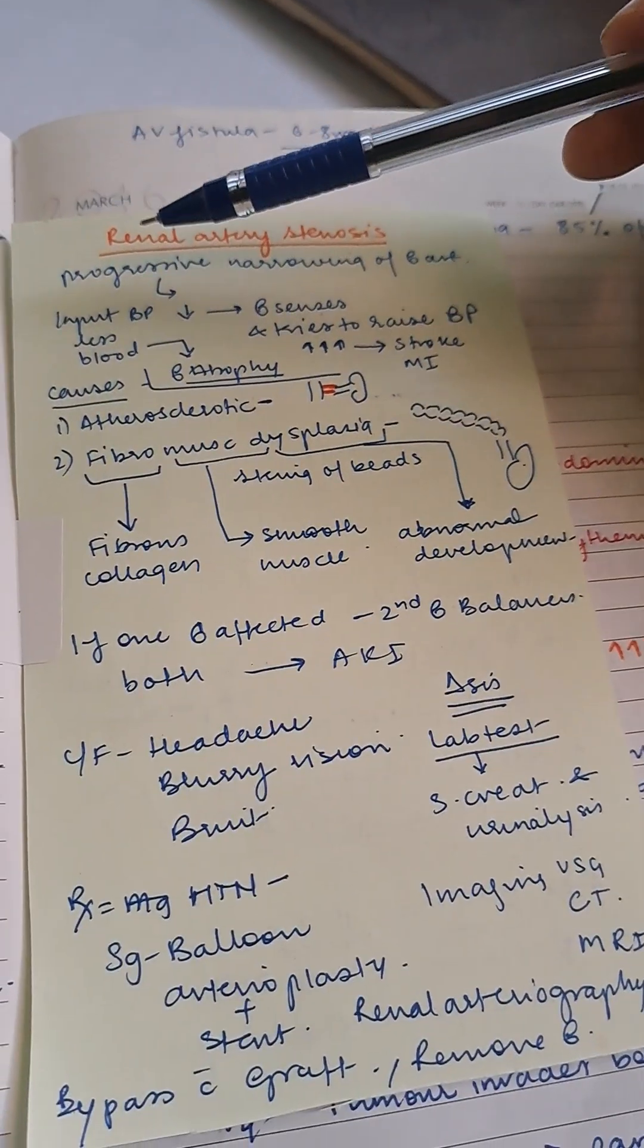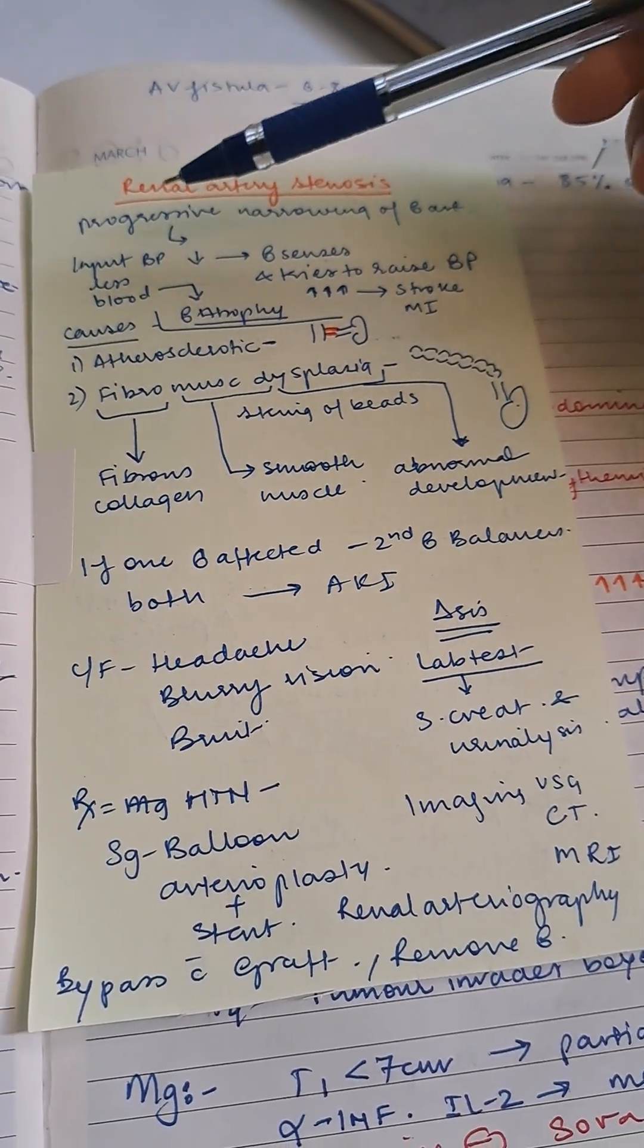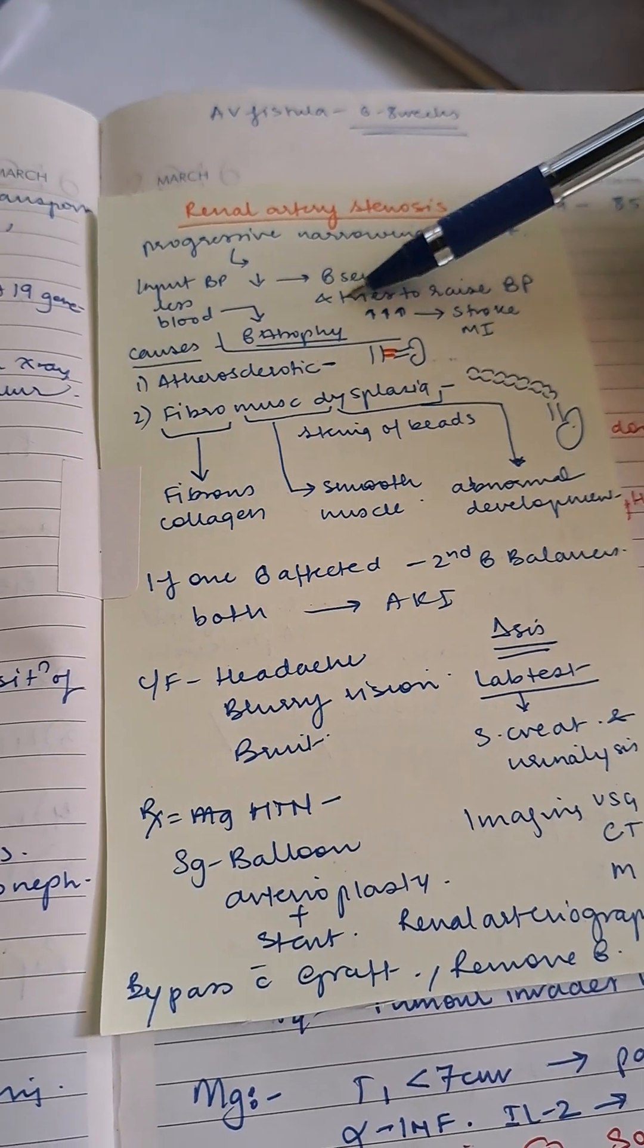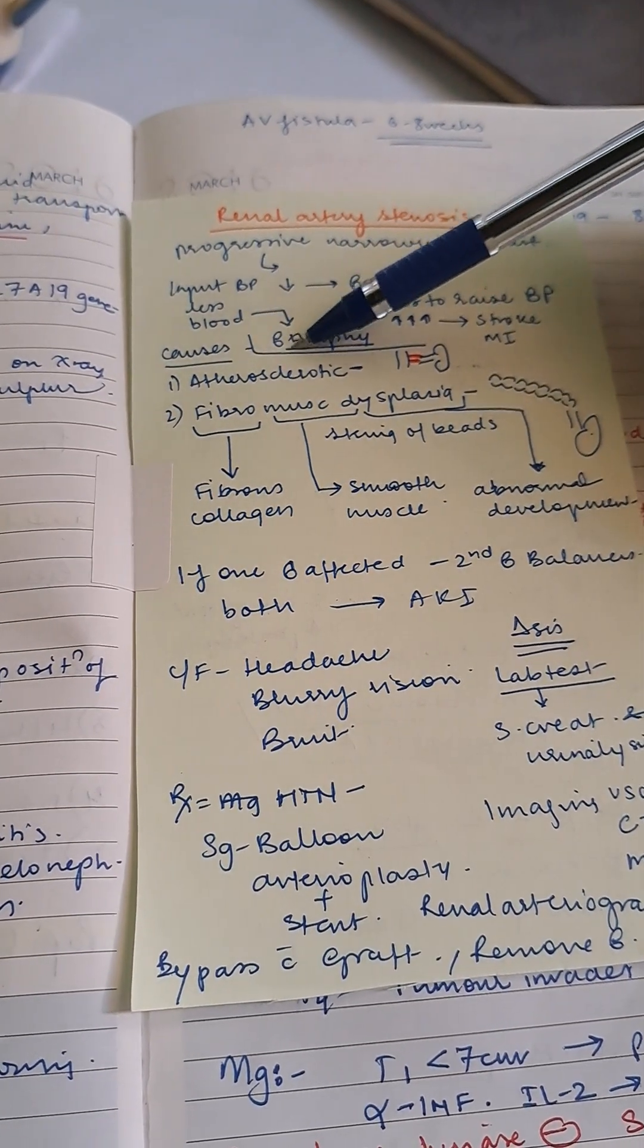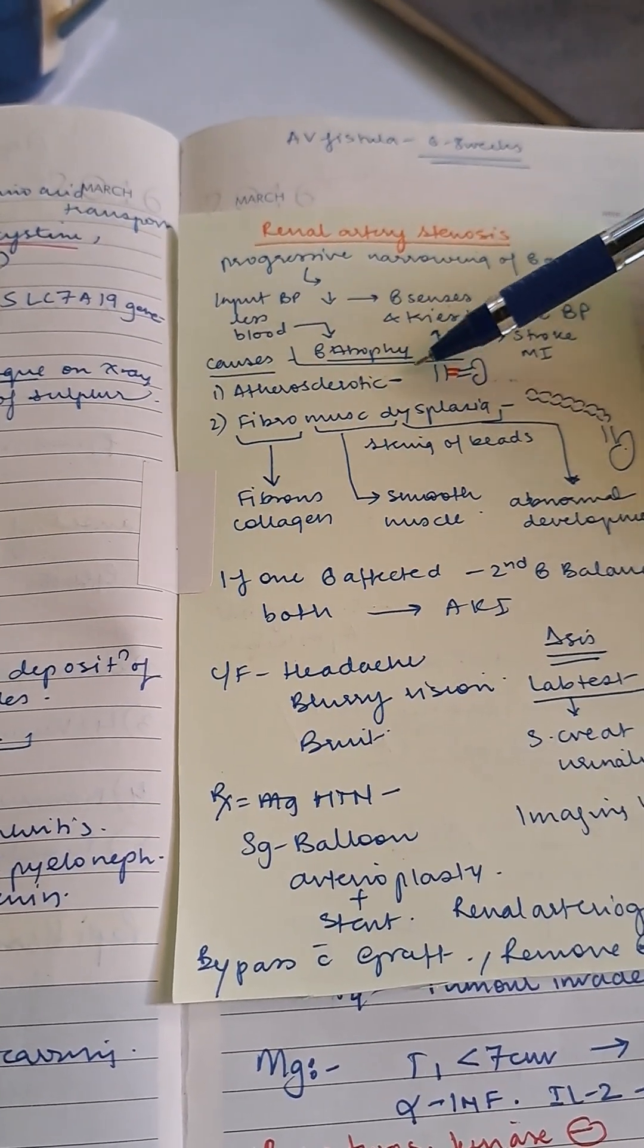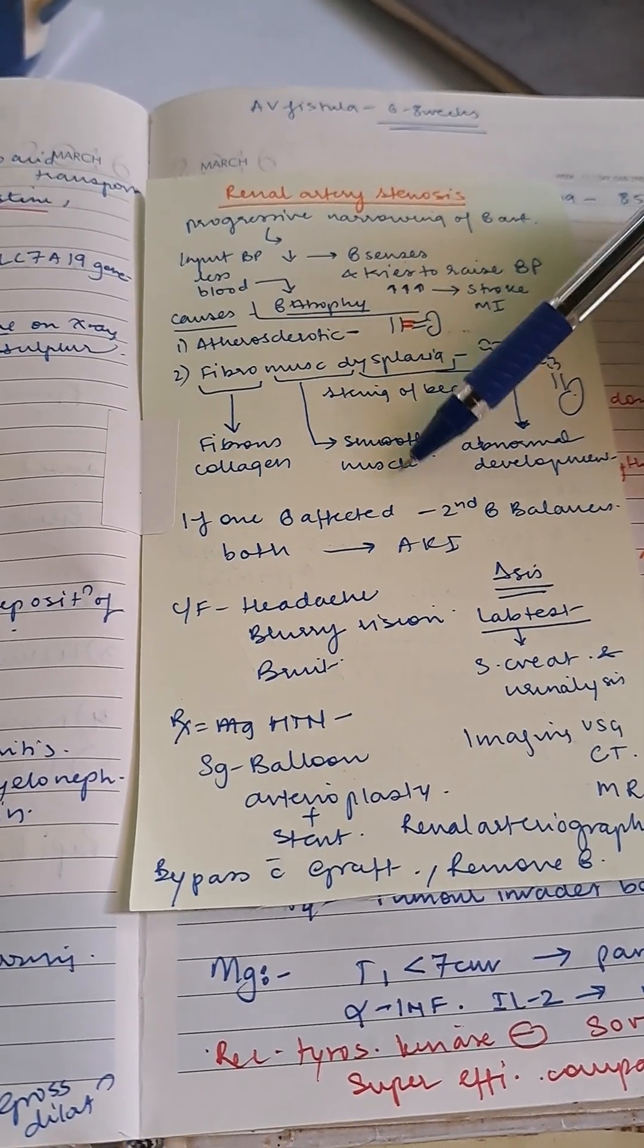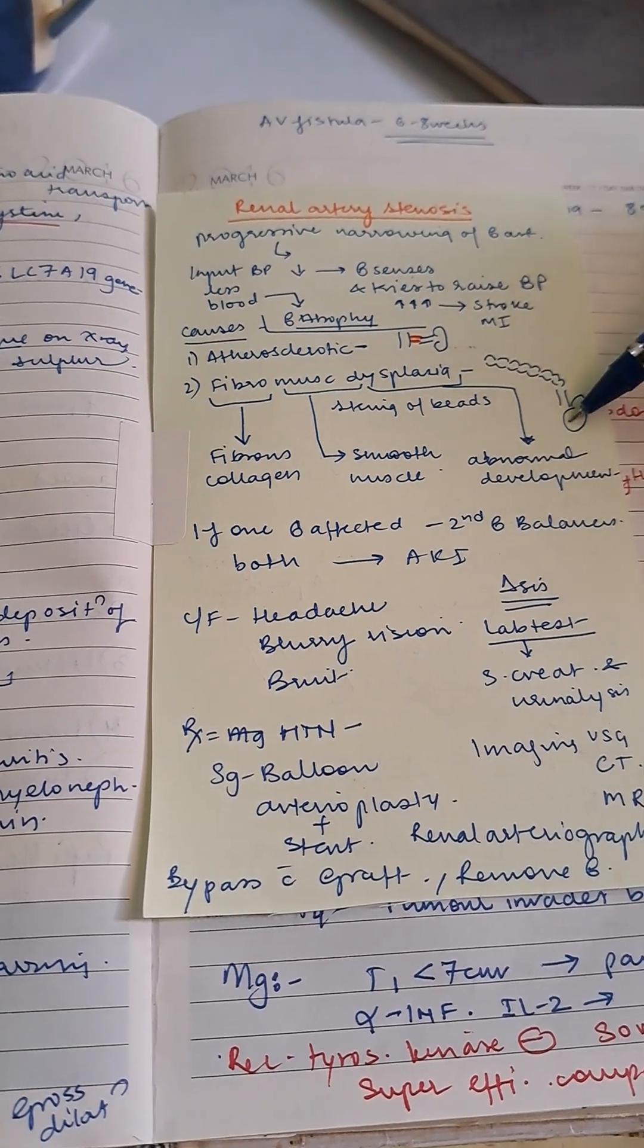Renal artery stenosis is progressive narrowing of the renal artery. Input blood pressure decreases, so the kidney senses this and tries to raise blood pressure, increasing chances of stroke and MI. There will be renal atrophy due to less blood. Causes are atherosclerosis in older population, and fibromuscular dysplasia—fibrous collagen, smooth muscle, and abnormal development showing string of beads appearance on CT scan.